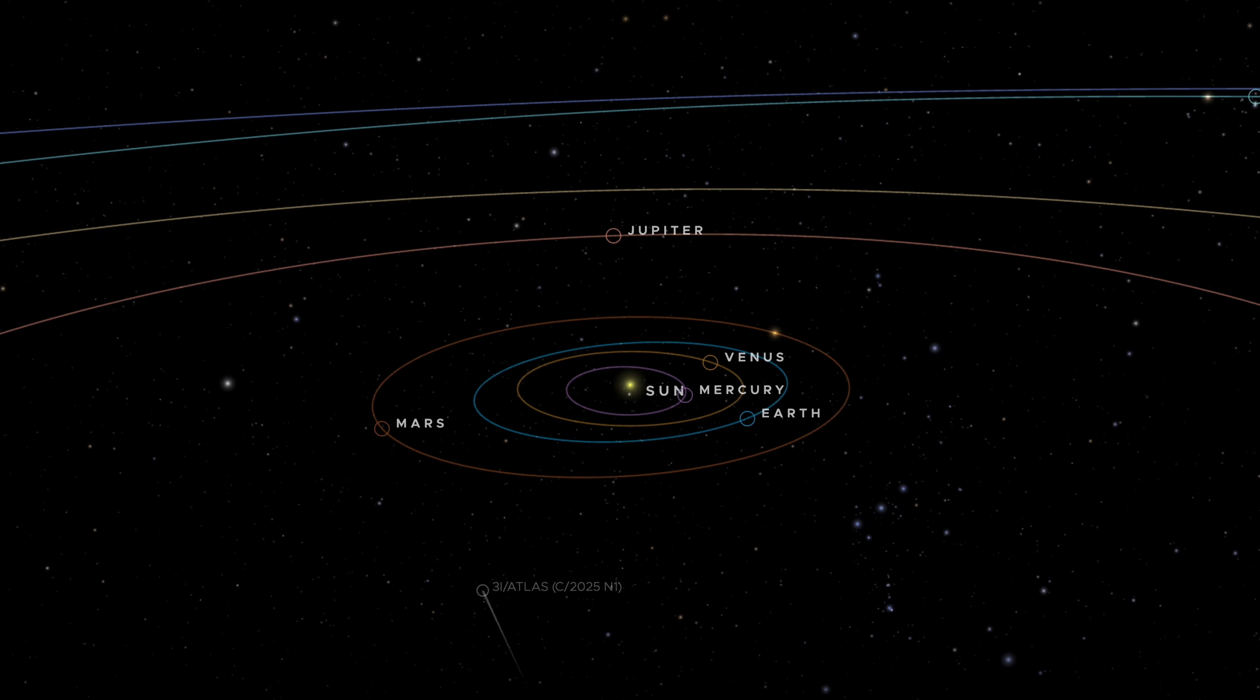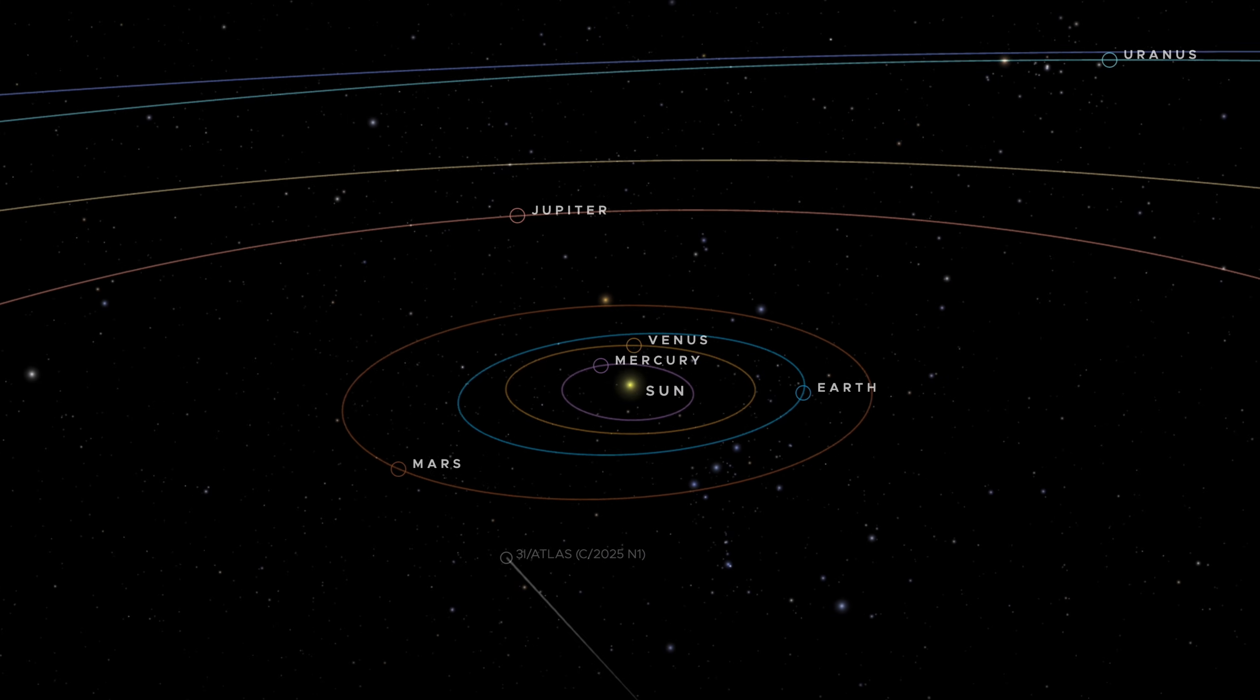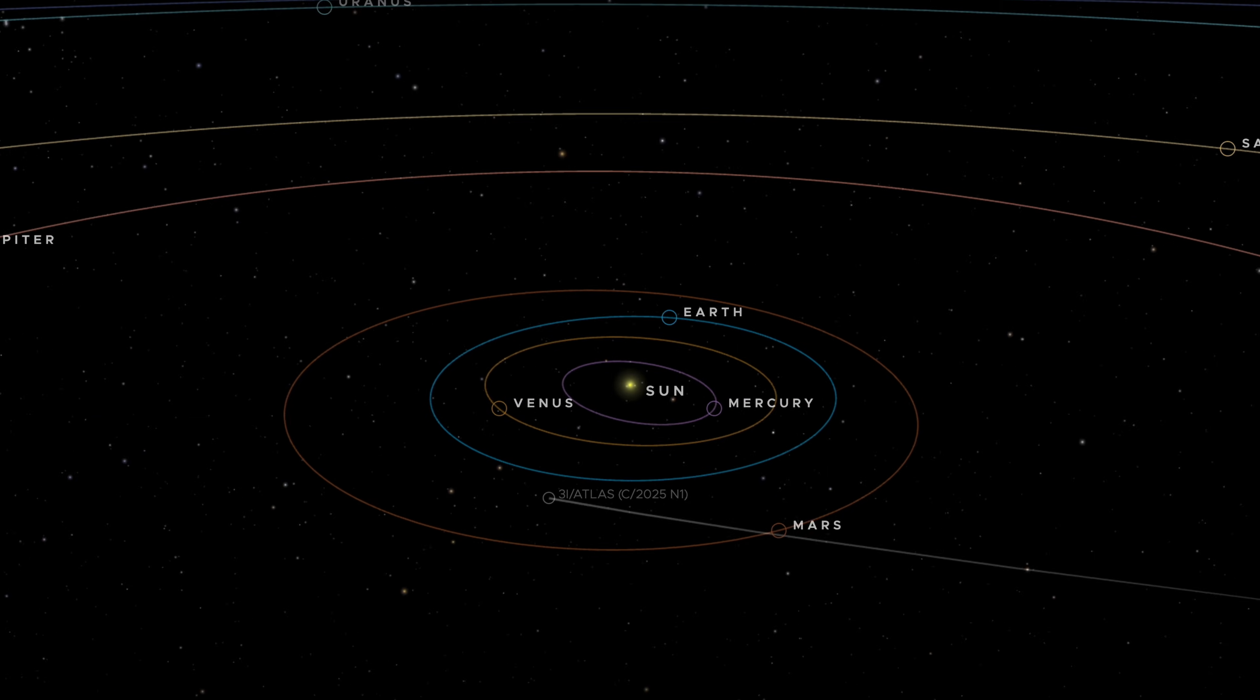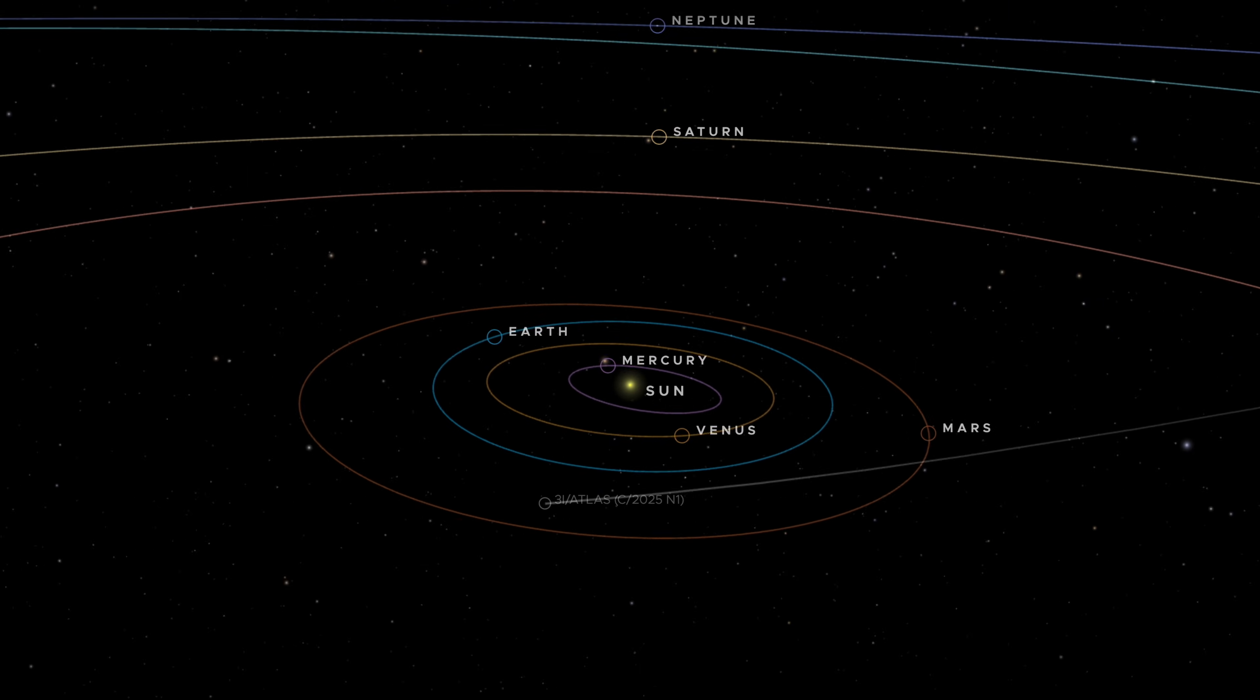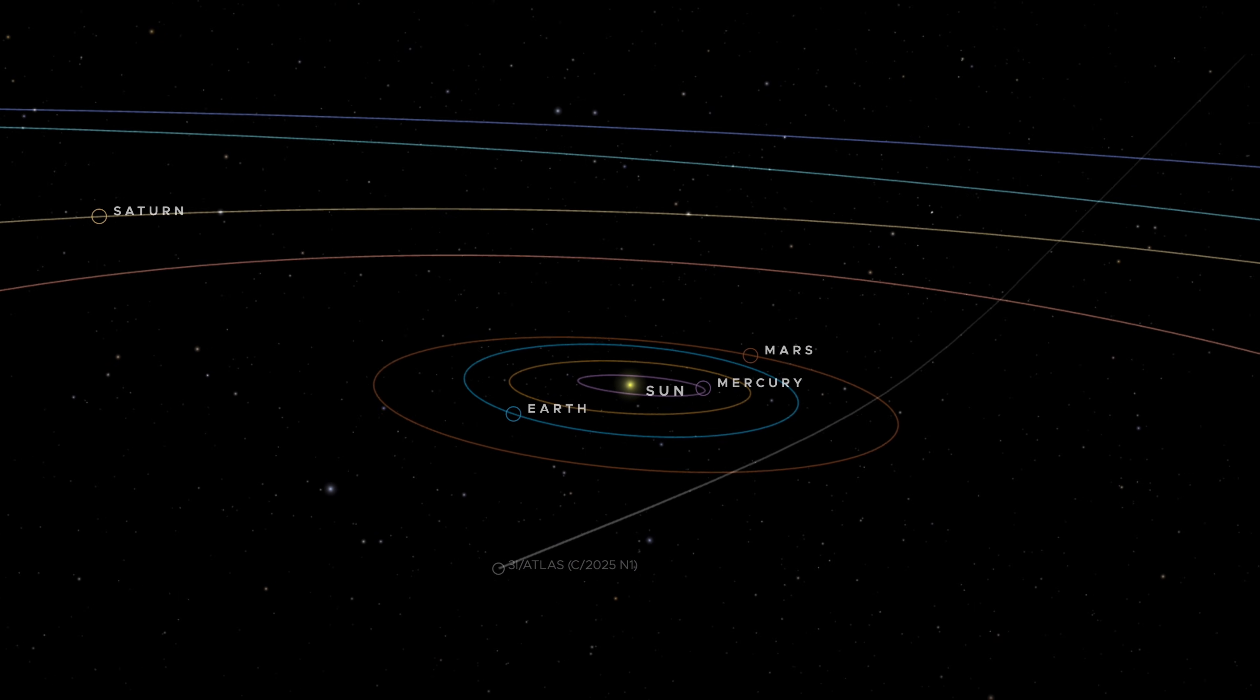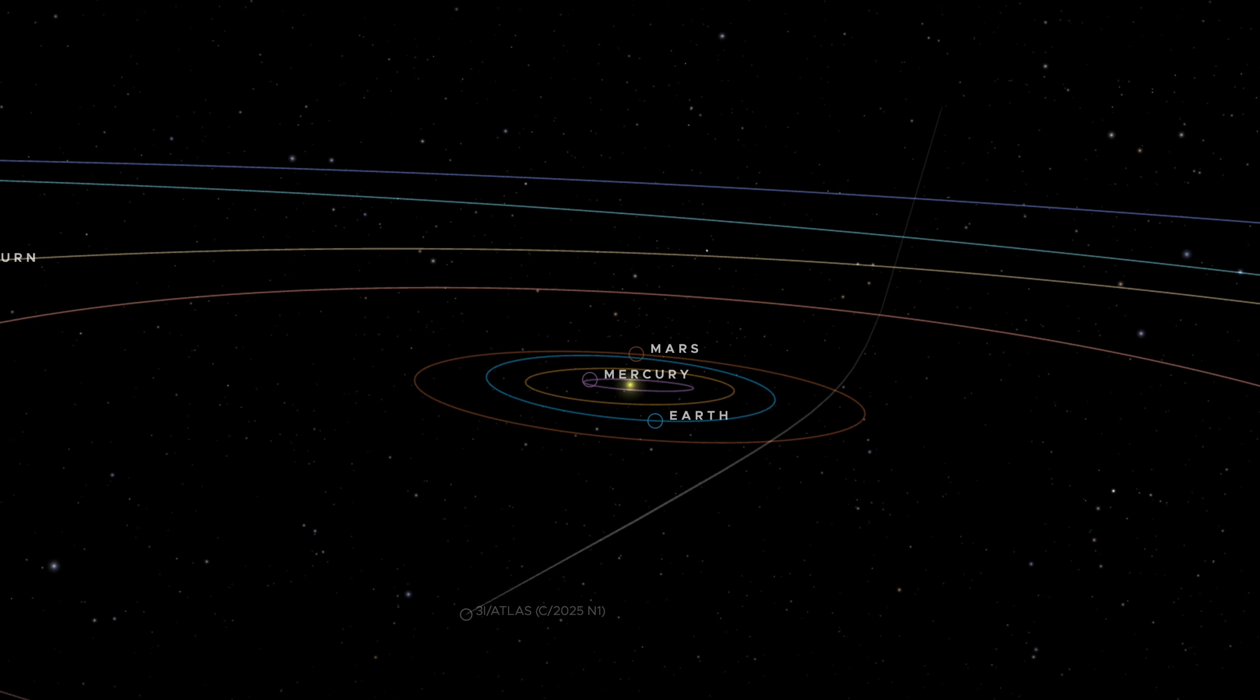It's possible that there was some form of manipulation at play here, perhaps an external force influencing the object's path. The highly controlled deflection could be a clue that there is something about 3I Atlas that cannot be explained by natural gravitational forces alone.